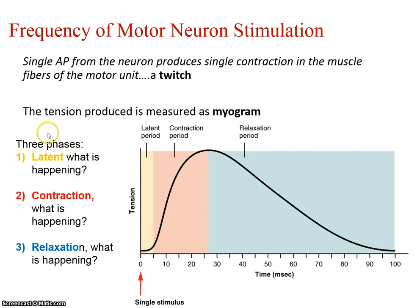There are three phases we look at in myograms. There's a latent period in which a lot of the activity we've talked about is happening — the acetylcholine is leaving the neuron, binding to receptors, opening sodium channels, spreading along the sarcolemma, going down the T-tubule, opening the sarcoplasmic reticulum. Calcium is leaving the sarcoplasmic reticulum, binding to troponin, and troponin is moving tropomyosin. That's all happening in the latent period — very fast, because these are milliseconds.